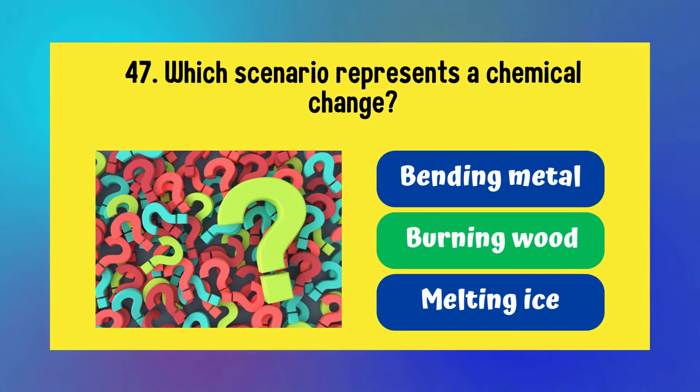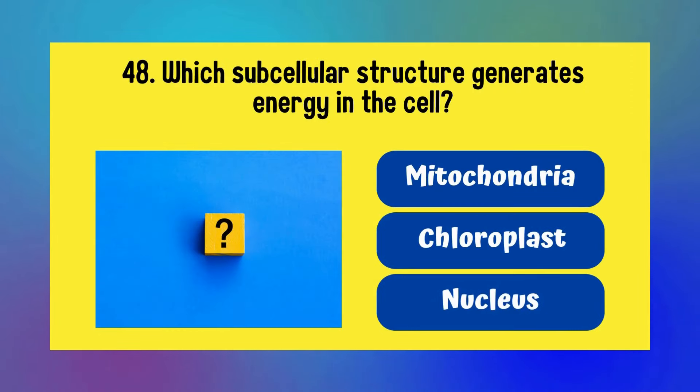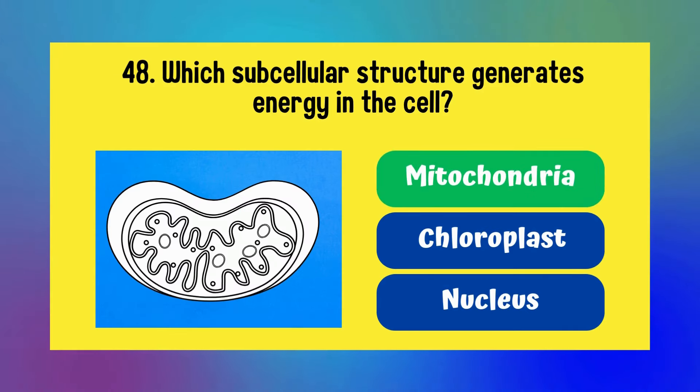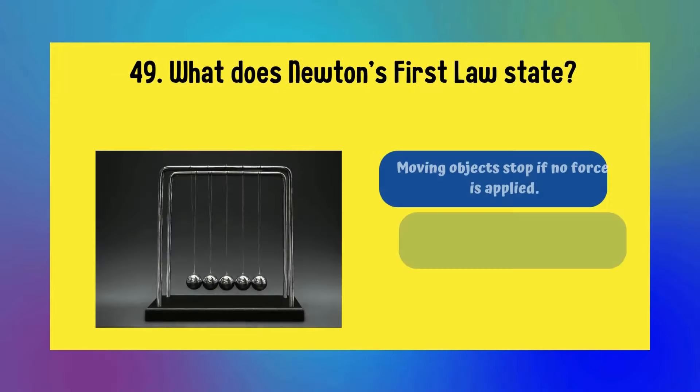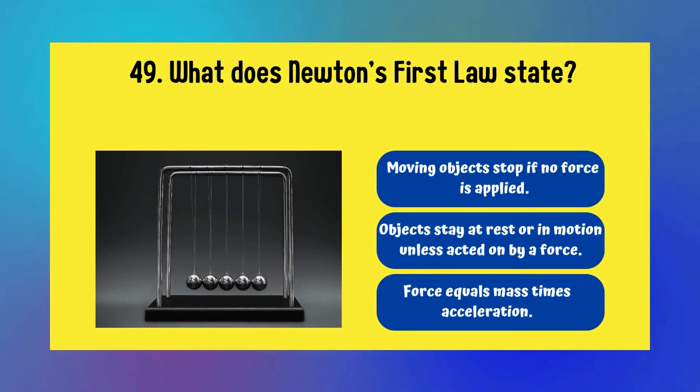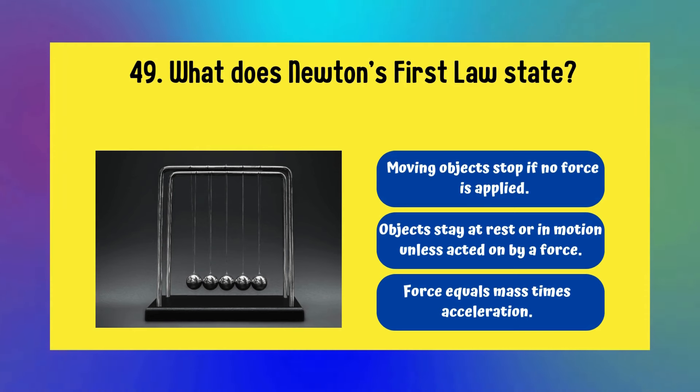Which scenario represents a chemical change? Bending metal, burning wood, or melting ice? It is burning wood. Which subcellular structure generates energy in the cell? Mitochondria, chloroplast, or nucleus? It is mitochondria.